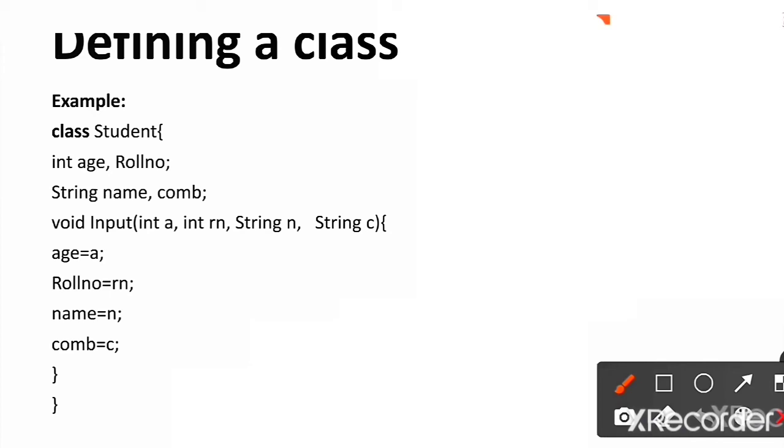So, here I am defining the class name as student beginning with capital letter S. And in reality, student object has attributes like name, combination,